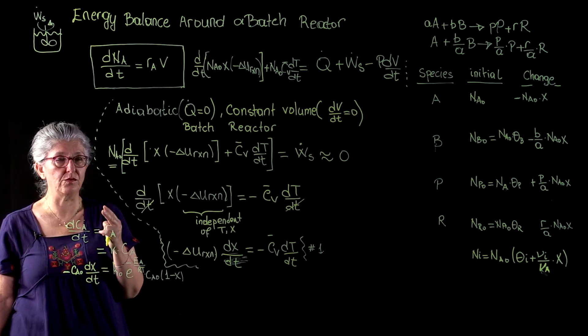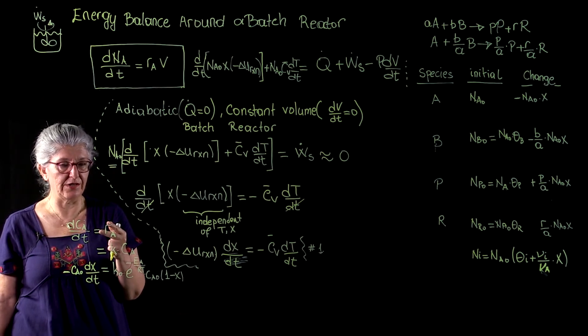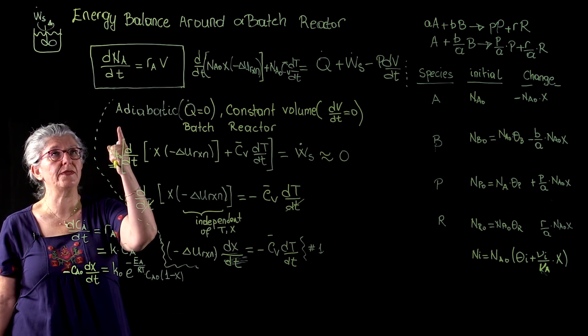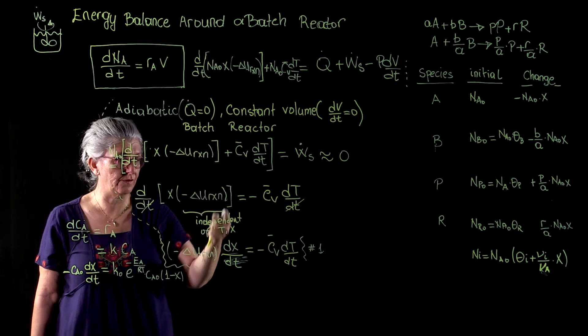We have two unknowns. One is conversion. One is temperature. And we have two equations. One coming from the species conservation and the other one coming from the first law. All right?